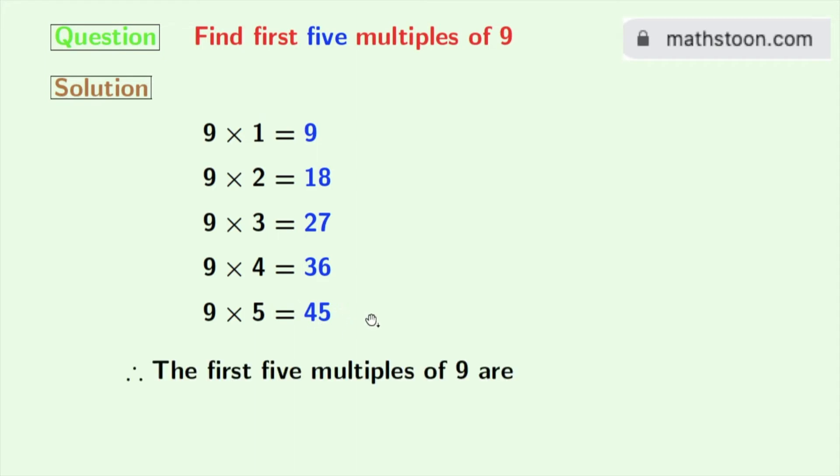So look, we have got all the first five multiples of nine, which are the blue colored numbers. These are 9, 18, 27, 36, and 45.